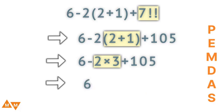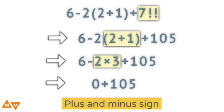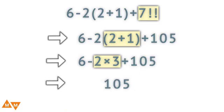Now the expression only contains plus and minus signs. Since both signs have the same priority, the expression will be solved from left to right. 6 minus 6 will give 0. Now finally we get 105. This is our final answer.